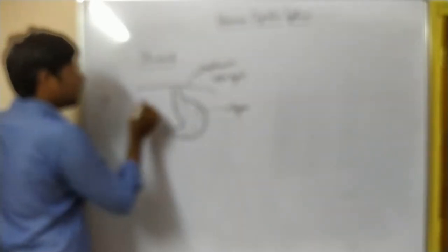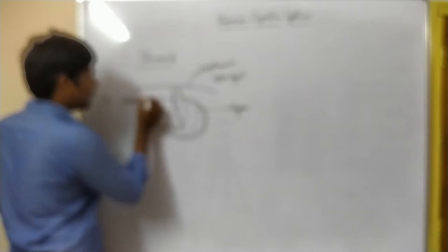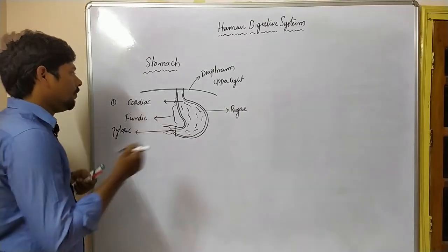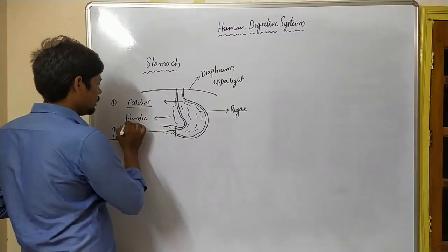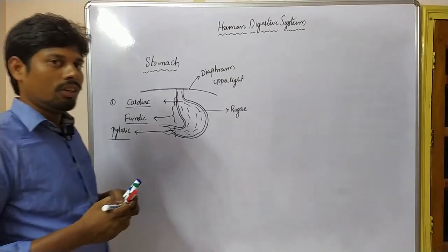This stomach can be divided into three parts: upper, middle, and lower. Part one is the cardiac region, the lower part is the pyloric region, and the middle part, which is the largest part of the stomach, is called the fundic region. So cardiac, fundic, and pyloric regions are present in the stomach.